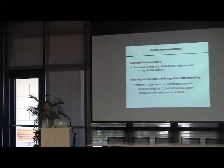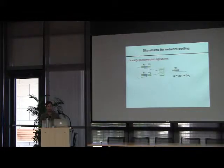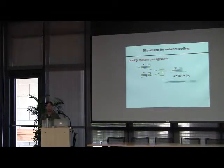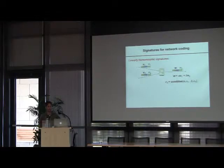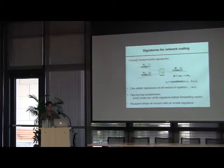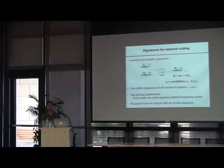The idea that we propose, building on prior work, is what we call linearly homomorphic signatures. Given a very basic example of two vectors V1 and V2 with signatures generated in some way, if we take the linear combination aV1 + bV2, there's some kind of combine algorithm that takes the signatures and these combination coefficients and produces a signature on this combined vector that validates it. Using this combine algorithm, if we have signatures on all the initial vectors V1 through Vm, we can obtain signatures on any vector in the space spanned by them. This allows hop-by-hop containment — each intermediate router can verify the signature on received vectors before using them in its own combinations, and ultimately the recipient can drop any vector with an invalid signature.